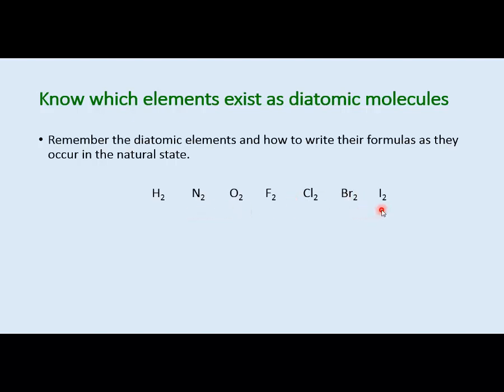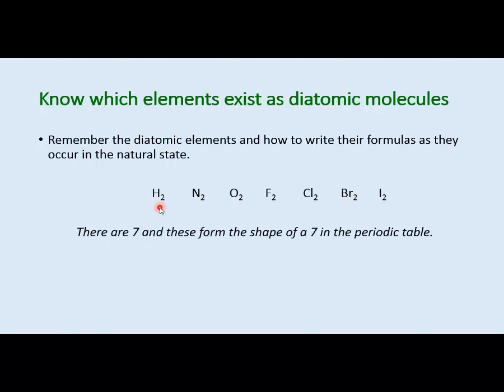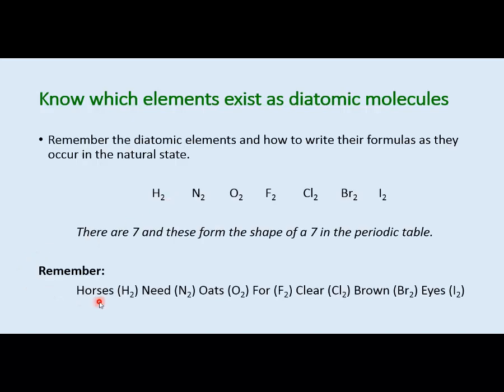You can also use the mnemonic: 'Horses need oats for clear brown eyes' to remember hydrogen, nitrogen, oxygen, fluorine, chlorine, bromine, and iodine as the diatomic elements. Whenever we write a chemical reaction, I expect you to write those as diatomic molecules unless they've been separated into individual atoms, which takes energy to break the covalent bonds.